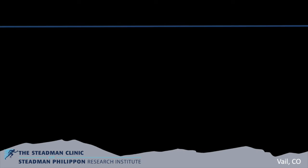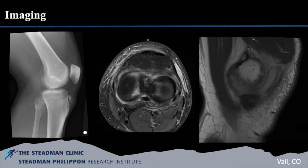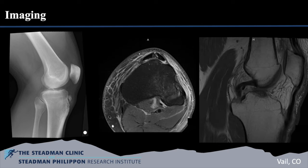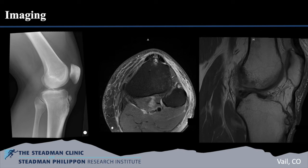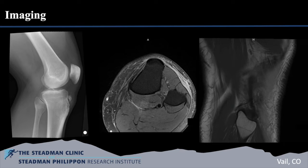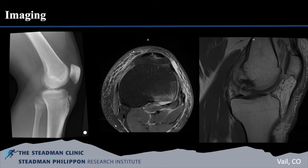We are presenting the case of a 43-year-old male patient with chronic left knee pain at the site of a non-united Osgood-Schlatter ossicle proximal to his tibial tubercle. He has failed conservative therapy. MRI confirmed a large non-united ossicle at the distal aspect of the patellar tendon with surrounding edema. The patient has been indicated for adult-onset Osgood-Schlatter, with symptomatic knee pain and stiffness for longer than 10 years.